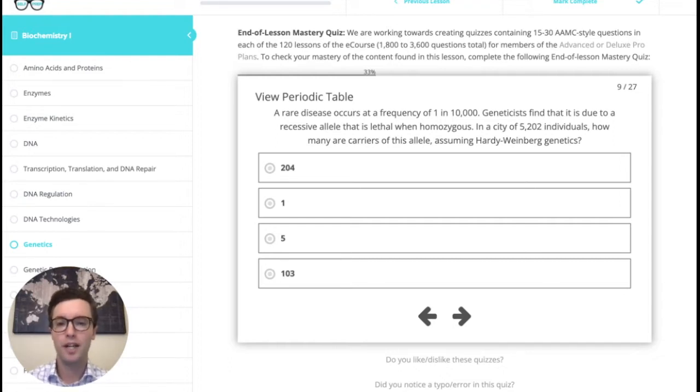As you can see here, the question says, a rare disease occurs at a frequency of 1 in 10,000. Geneticists find that it is due to a recessive allele that is lethal when homozygous. In a city of 5,202 individuals, how many are carriers of this allele assuming Hardy-Weinberg genetics?